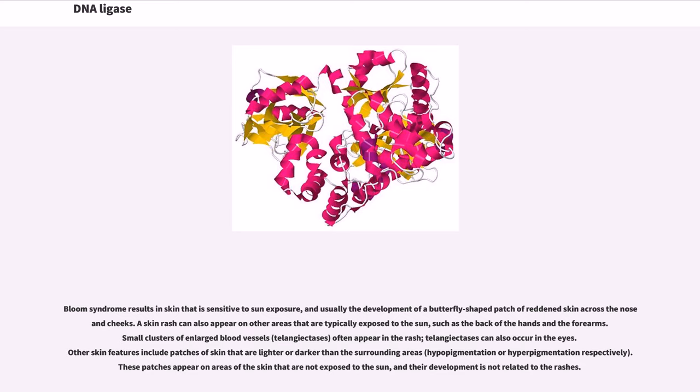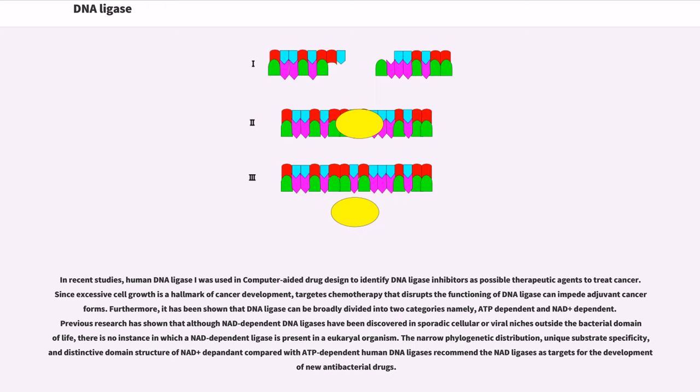Other skin features include patches of skin that are lighter or darker than the surrounding areas, hypopigmentation or hyperpigmentation respectively. These patches appear on areas of the skin that are not exposed to the sun, and their development is not related to the rashes.